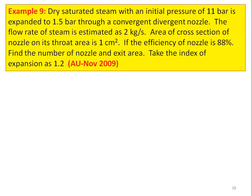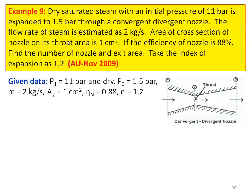This is problem number 9 from the Anna University question paper, November 2009. Dry saturated steam with an initial pressure of 11 bar is expanded to 1.5 bar through a convergent-divergent nozzle. The flow rate of the steam is 2 kg/s. The throat area is 1 cm². The nozzle efficiency is 88%. Find the number of nozzles and exit area. Take the index of expansion N = 1.2.